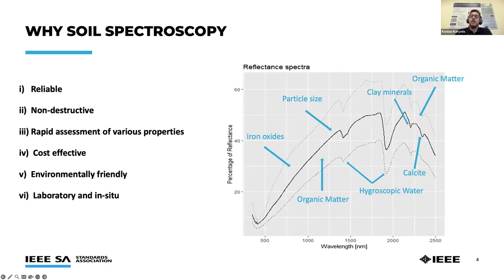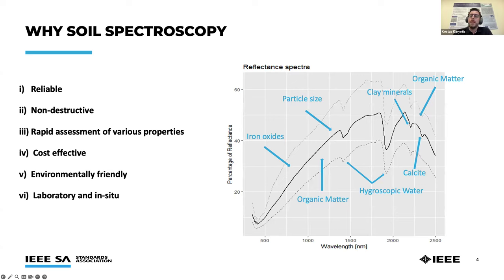Simply speaking, we send a beam of light to soil and measure what bounces back. Soil spectroscopy, particularly in the visible and NIR range, is a powerful tool for assessing soil properties quickly and non-destructively. By analyzing light reflectance from soil samples, this technique provides valuable information about organic matter content, mineral composition, moisture levels, and nutrient availability. This rapid, cost-effective method helps improve crop yields, monitor soil degradation, and guide sustainable land use practices. It can also support large-scale soil monitoring and mapping, crucial for environmental conservation.